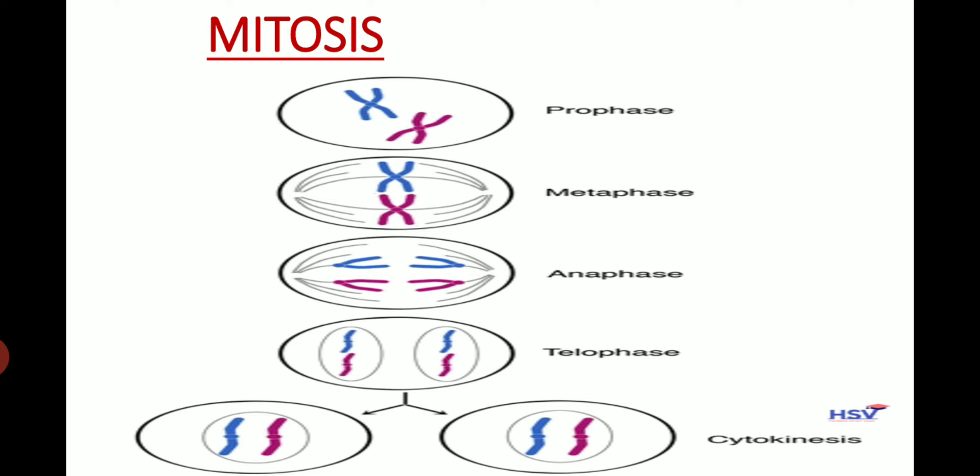In anaphase, the chromosomes divide into two equal parts. The two groups of chromosomes move away to the poles and arrange themselves around the centrosome.